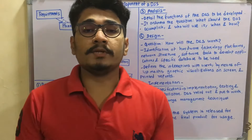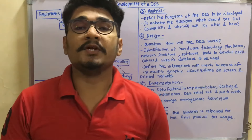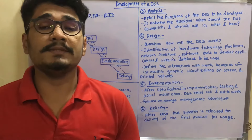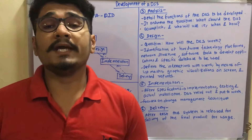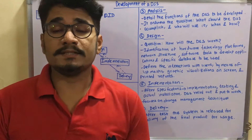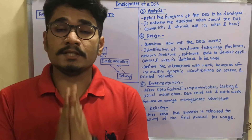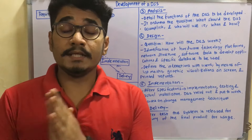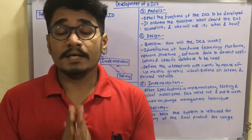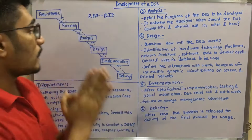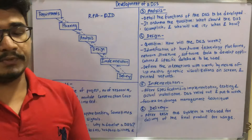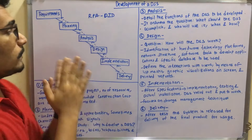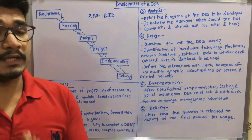Hey guys, welcome back to yet another interesting video based on BI. In today's video we will be seeing how we can develop a DSS — that is a Decision Support System — and what are the different phases in making a DSS. There are around six different phases for making a DSS, so let's have an overview of what those six phases are.